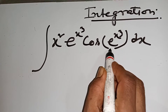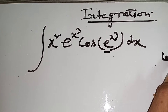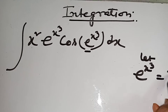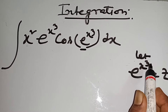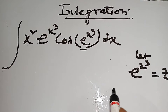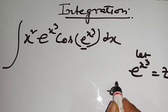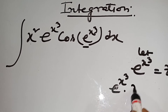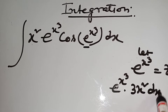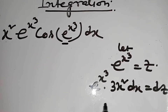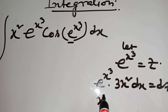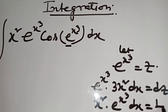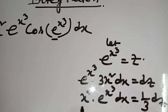At first, let e to the power x cube equal to z. dx of e to the power x cube means e to the power x cube, into dx of x cube, that means 3x square dx equal to dz. Now x square into e to the power x cube dx equal to one third dz.